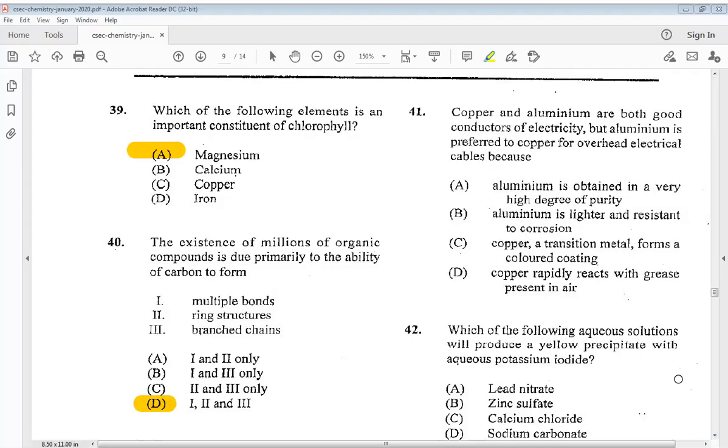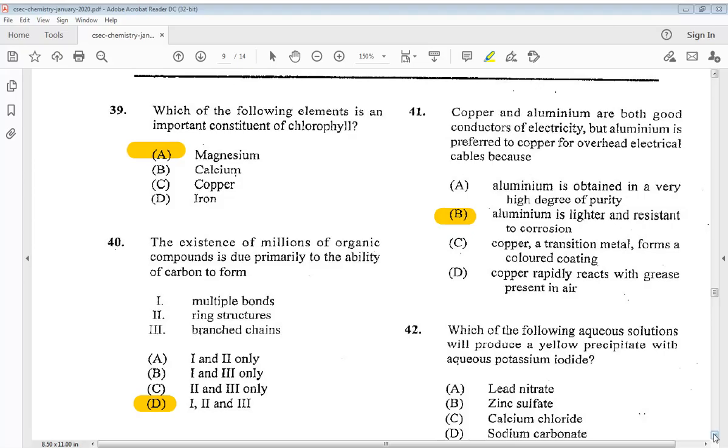Question 41. Copper and aluminum are both good conductors of electricity, but aluminum is preferred to copper for overhead electrical cables because A aluminum is obtained in a very high degree of purity, B aluminum is lighter and resistant to corrosion, C copper, a transition metal, forms a colored coating, or D copper rapidly reacts with grease present in air. So the answer would be B, aluminum is lighter and resistant to corrosion.